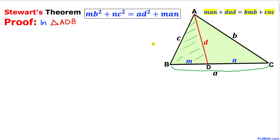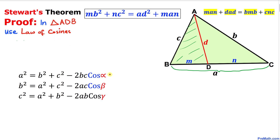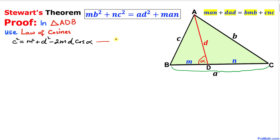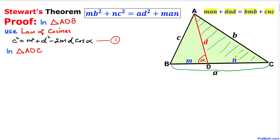Now let's start the proof by focusing on triangle ADB and applying the law of cosines. Let's call angle ADB as alpha. Then the law of cosines gives us: c² = m² + d² − 2md·cos(α). Let's call this equation number one.